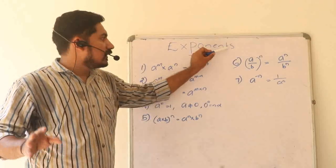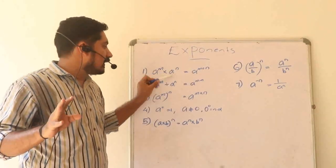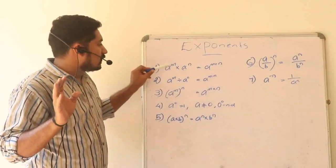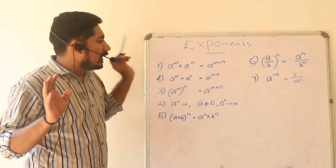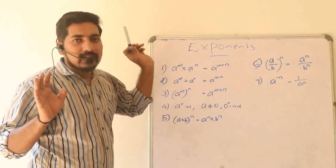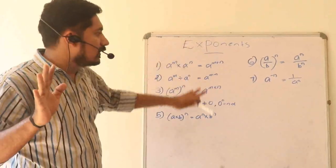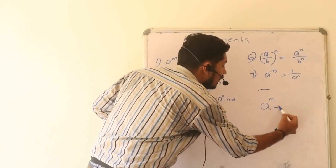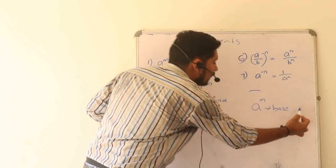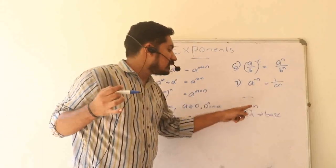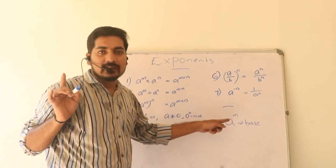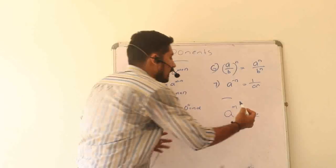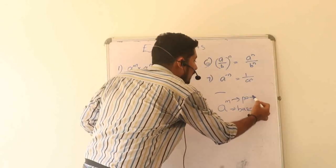Okay, this is the topic of Exponents — the Krithiya Niyamanga. The rule is: a raised to m, into a raised to n. In a raised to m, we call 'a' the base. We call m the power or exponent.